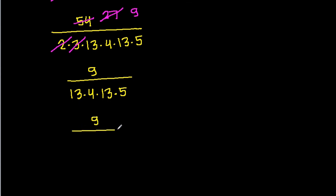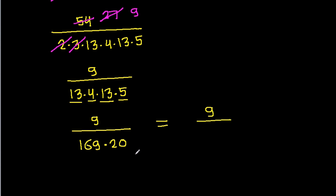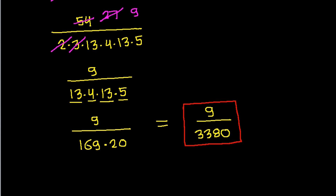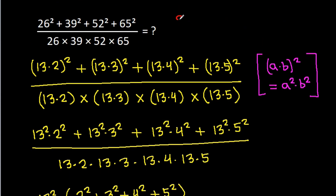So it is 9 divided by 13 times 13 is 169, times 4 times 5 is 20, giving 169 times 20 which is 3380. So the final answer is 9 divided by 3380.